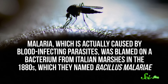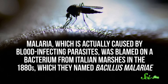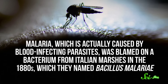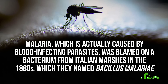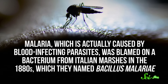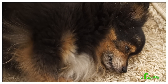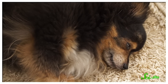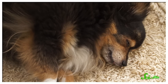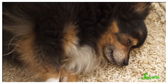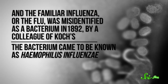Malaria, which is actually caused by blood-infecting parasites, was blamed on a bacterium from Italian marshes in the 1880s, which they named Bacillus malariae. Canine distemper, a sometimes deadly disease in dogs that causes symptoms like fever and vomiting, was linked to a series of different bacteria before it was finally proven to be a virus in the 1920s. And the familiar influenza, or the flu, was misidentified as a bacterium in 1892 by a colleague of Koch's.